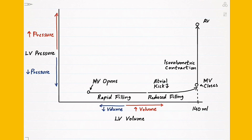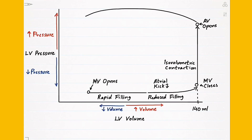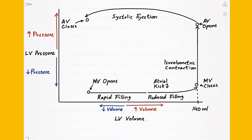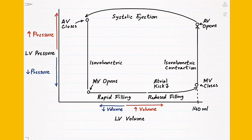After reaching a certain pressure, the aortic valve opens and the ventricle can push blood out into the aorta. Blood leaving the left ventricle means the volume starts decreasing, so the graph moves towards the left along the x-axis — this phase is called systolic ejection. Once the left ventricle is done contracting, the aortic valve closes to prevent backflow from the aorta and the left ventricle relaxes back to its resting state. Since no blood is entering or leaving during this phase, there is no change in volume, and this phase is called isovolumetric relaxation.